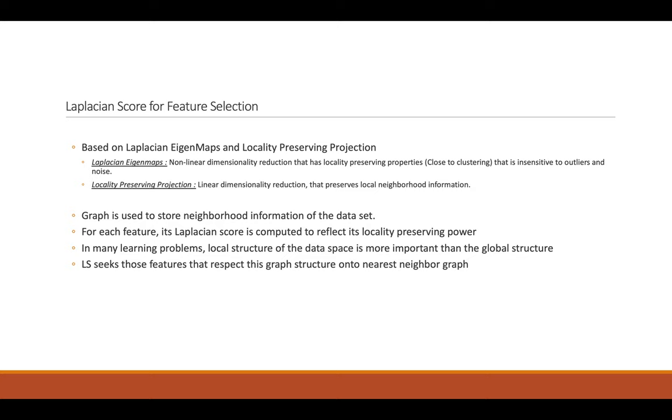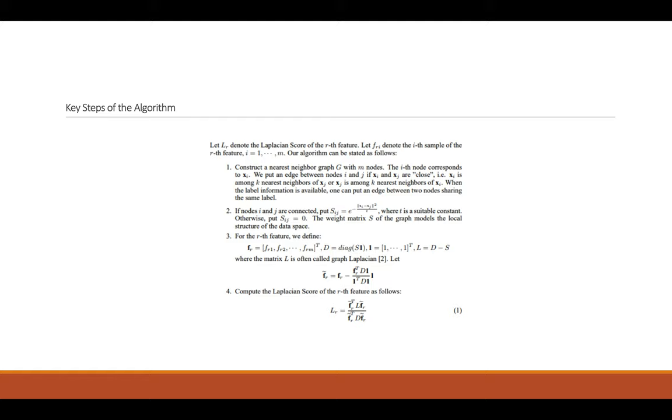Let's look at the key steps of the algorithm. First, construct the nearest neighborhood graph G with M nodes. Then, fill the similarity matrix S. And for each feature, create a vector, in this case this is FR, and calculate the D matrix based on S, and calculate L by subtracting S from D. L matrix is often called Laplacian, and at the last step, compute the Laplacian score for each feature as follows.